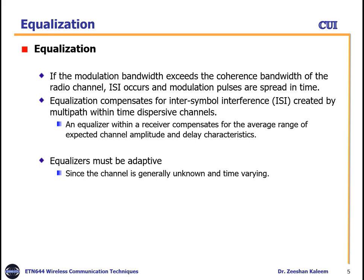Now moving to the main topic: when do we need equalization? If the modulation bandwidth — the bandwidth on which you are transmitting data — exceeds the coherence bandwidth of the radio channel, then ISI occurs and modulation pulses spread in time. The coherence bandwidth is the bandwidth over which the channel remains constant or flat. To overcome this effect we need equalization.